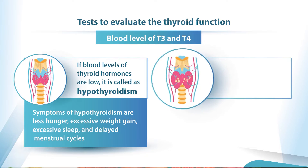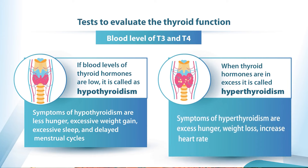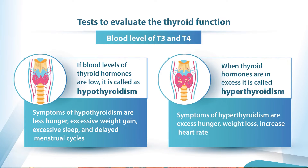When the thyroid hormones are in excess, we call it hyperfunctioning of thyroid gland or hyperthyroidism. The symptoms are exactly opposite — that is excess hunger, weight loss, and excessive heart rate, what we call palpitations. If you have hypo- or hyperthyroidism-related symptoms, then it is a must to check for thyroid hormones.